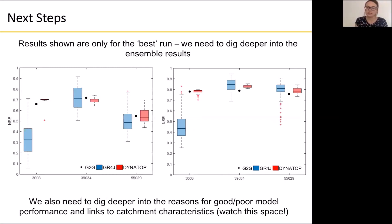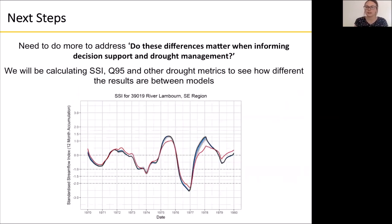We also need to dig deeper into the reasons for good or poor model performance and link this better to catchment characteristics. The final step of this project is to determine whether these differences matter when informing decision support and drought management — how much do model performance differences and evaluation metrics actually matter? We'll be calculating a standardised streamflow index, Q95, and other map drought metrics to really see how different the results are between the models.